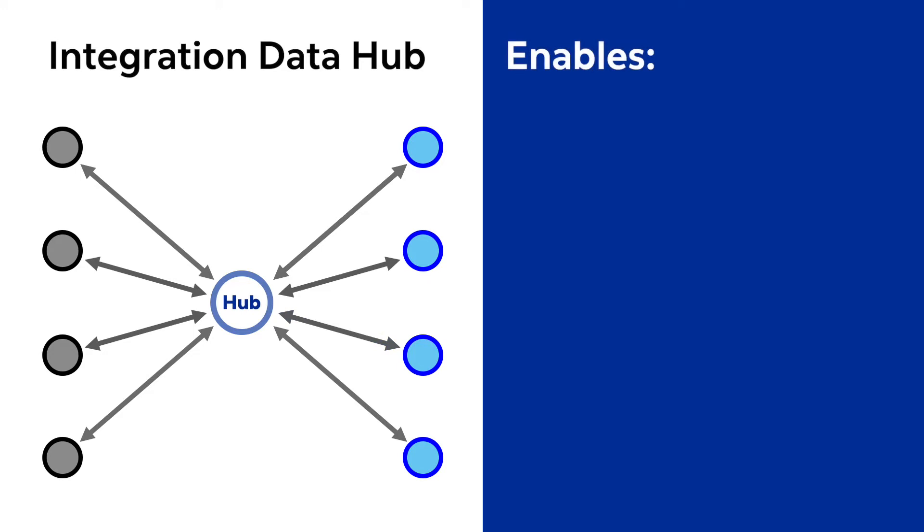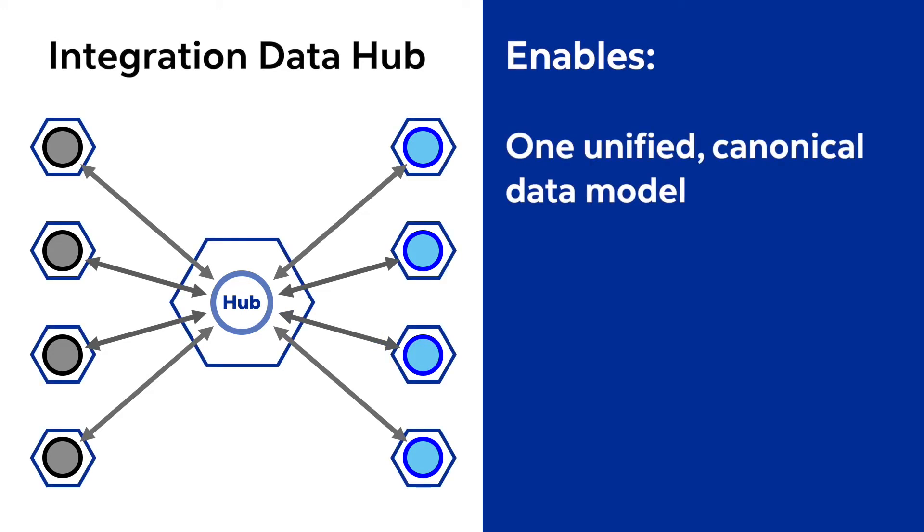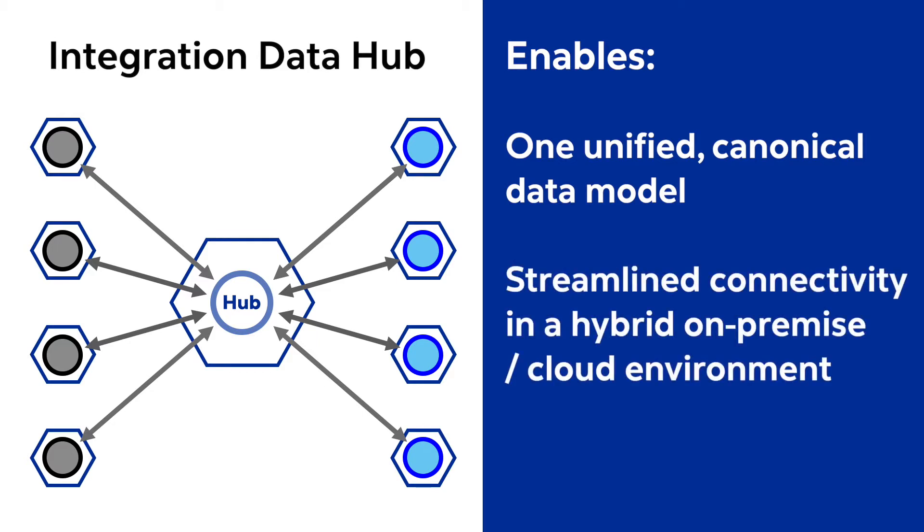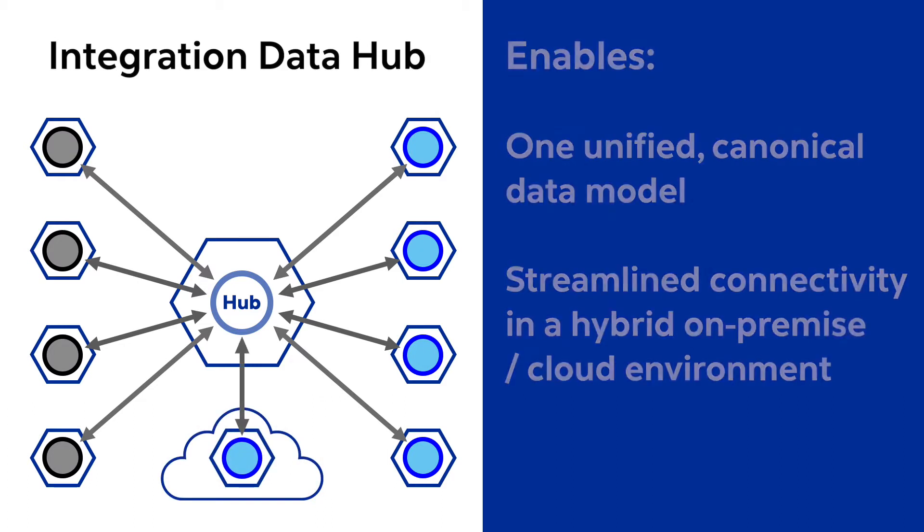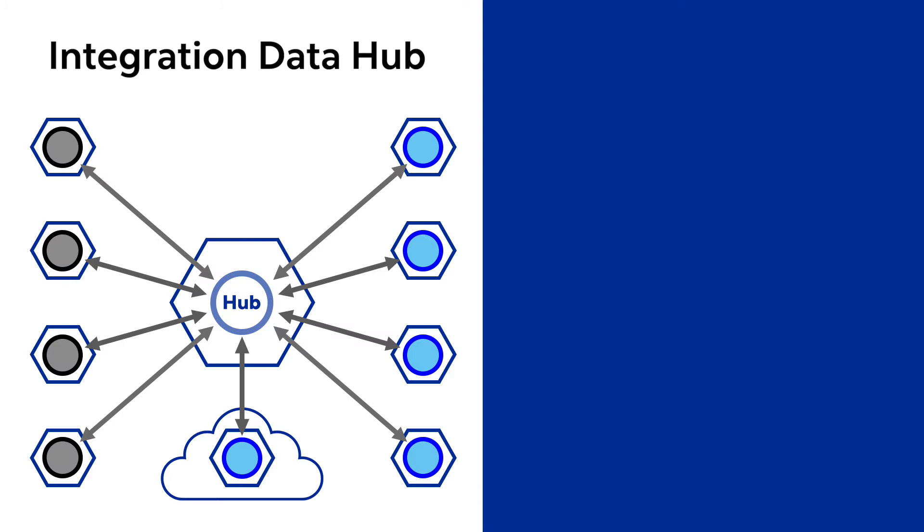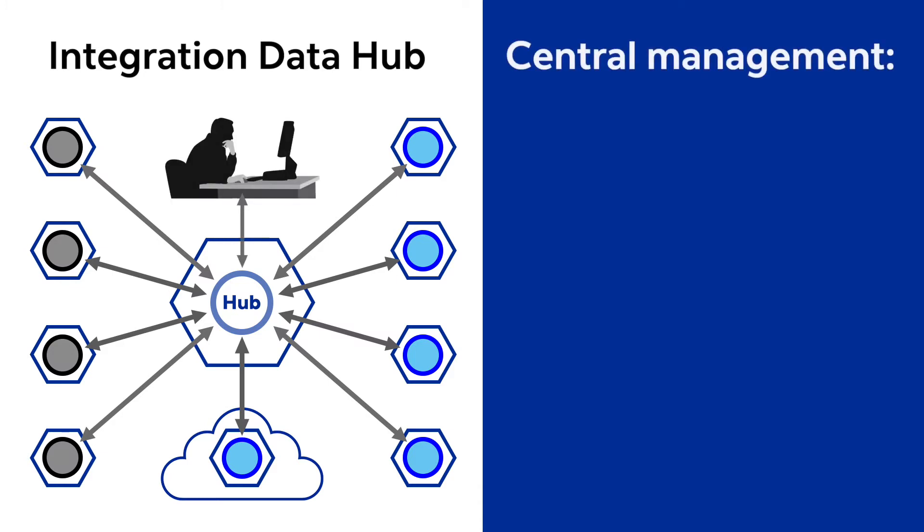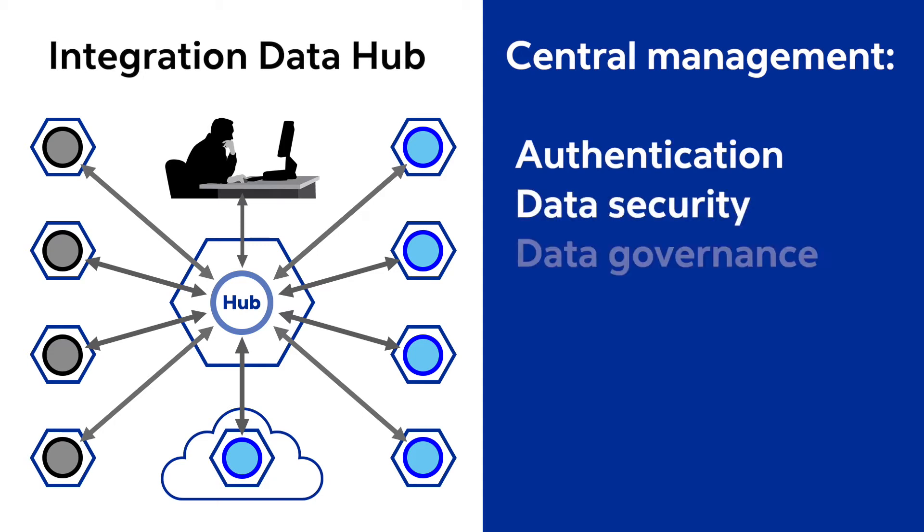The data hub enables the use of one unified canonical data model across the organization and can also streamline the connectivity of organizational systems in a hybrid on-premise and cloud environment. It reduces the time and effort to manage and protect data by centralizing the manageability of authentication, data security, and data governance.